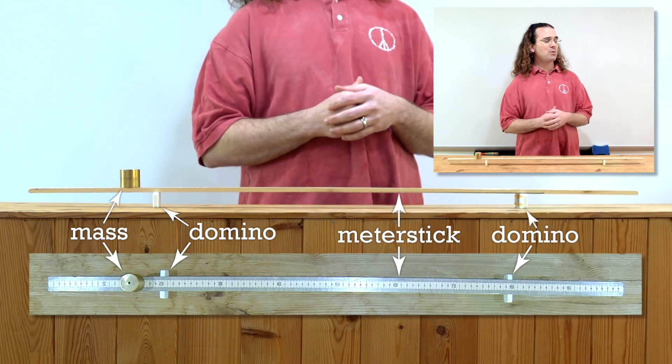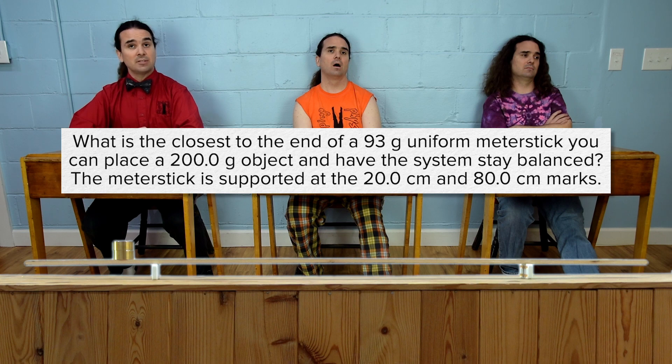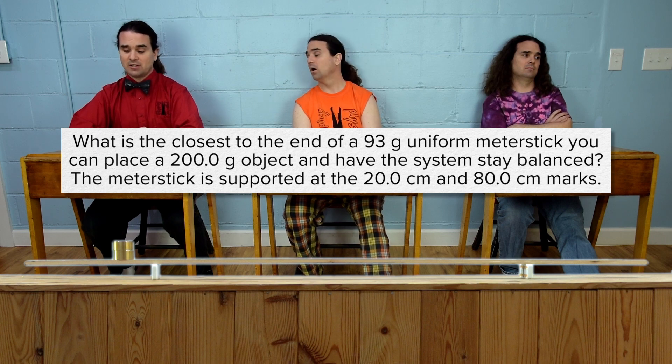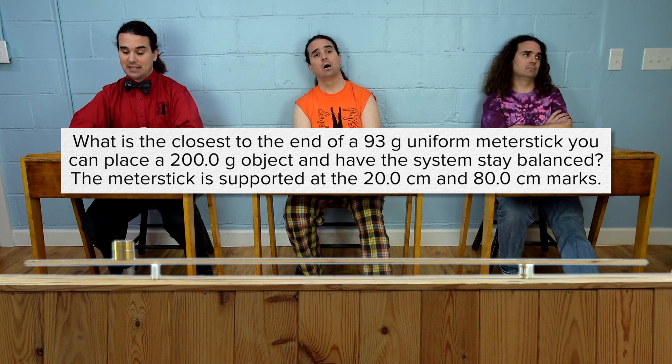Billy, please read the problem and Bobby, please translate. What is the closest to the end of a 93 gram uniform meter stick you can place a 200.0 gram object and have the system stay balanced?